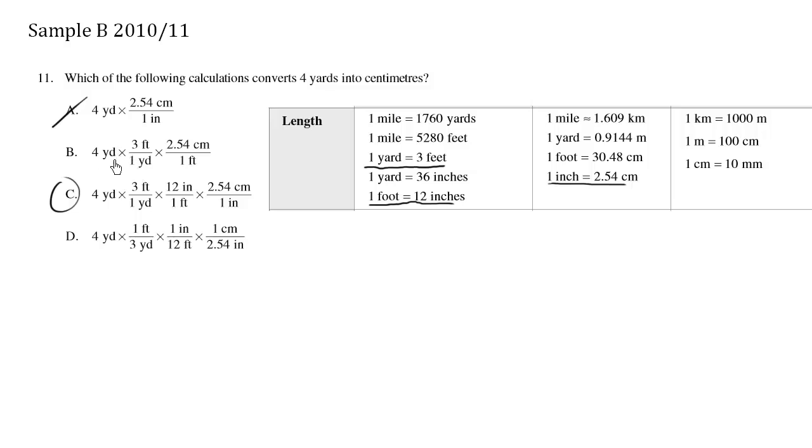Choice B, we have the 4 yards, 3 feet per yard. Now we do have 3 feet per yard over here, so this looks right. Now what we have here is the yards canceling out, we end up with feet. And what we have here is 2.54 centimeters per foot. Now that's wrong. 2.54 centimeters is 1 inch, not 1 foot. So this is incorrect.